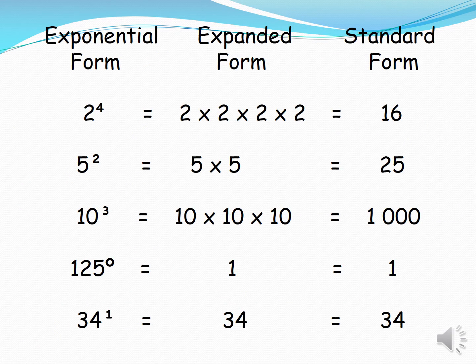We have here a table writing numbers in exponential form, expanded form, and standard form. 2 to the 4th: expanded form is 2×2×2×2, equal to 16. 5 squared: 5×5=25. 10 cubed: 10×10×10=1000. 125 raised to 0 equals 1. 34 raised to the 1st power equals 34.